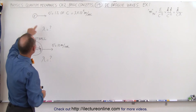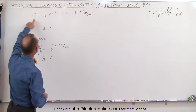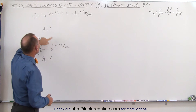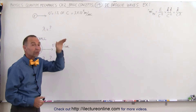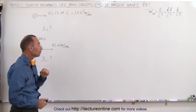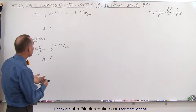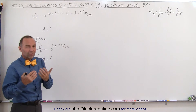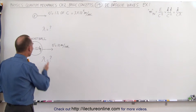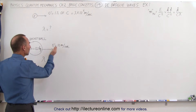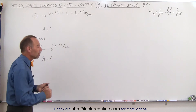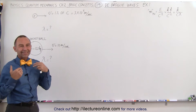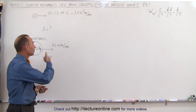For example, we have an electron moving at 1% the speed of light and we're wondering what is the wavelength of that electron as it's moving. Then we'll ask whether that same principle of particles acting like waves should apply to a basketball moving at 10 meters per second. You'll see that yes, in theory it should affect both types of particles — small ones as well as large ones.